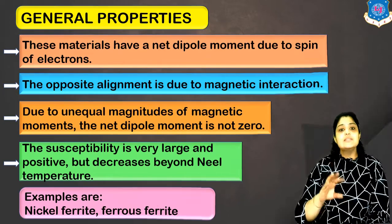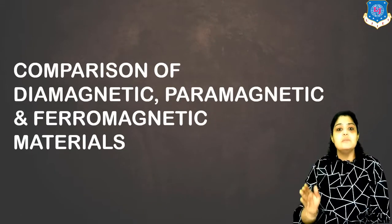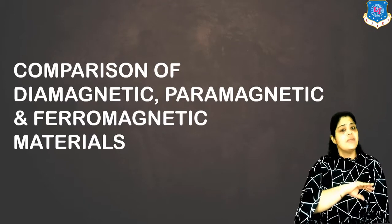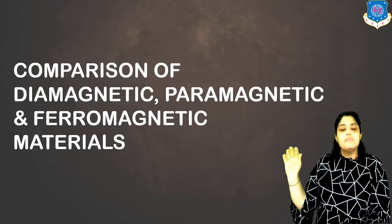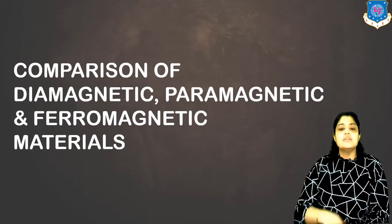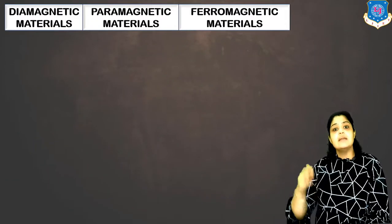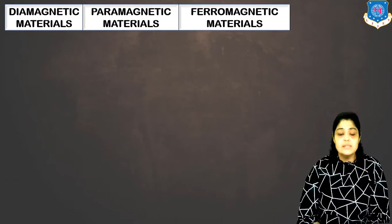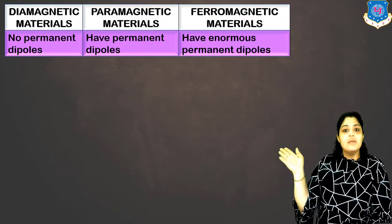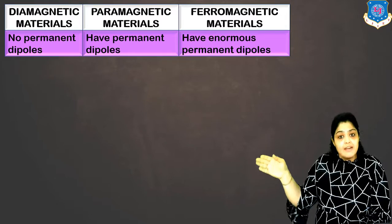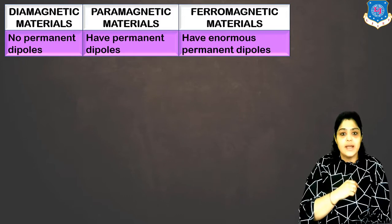Now I'll compare the three basic important types of magnetic materials. We have discussed the general properties of all five types, but here we compare diamagnetic, paramagnetic, and ferromagnetic materials. Starting with dipoles: diamagnets have no permanent dipoles, paramagnets have permanent dipoles, and ferromagnets have an enormous number of permanent dipoles.